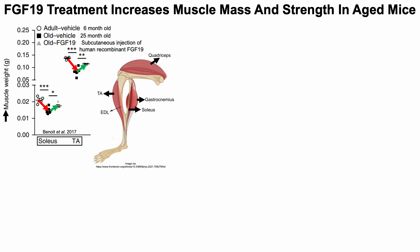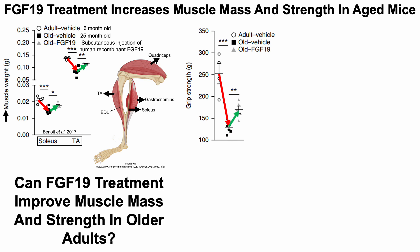What about muscle strength? Looking at grip strength, aged mice have about half the grip strength when compared with young six-month-old mice. Aged mice treated with FGF-19 had significantly increased grip strength, as shown by the green arrow.